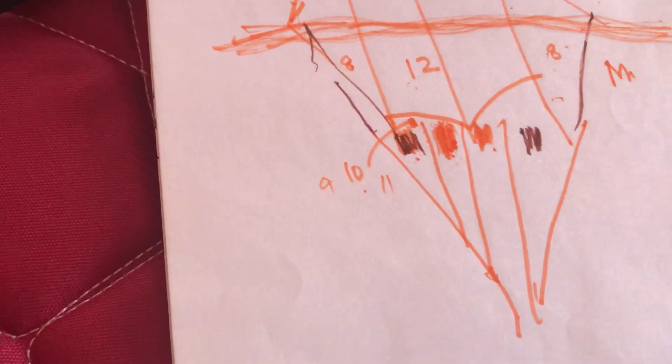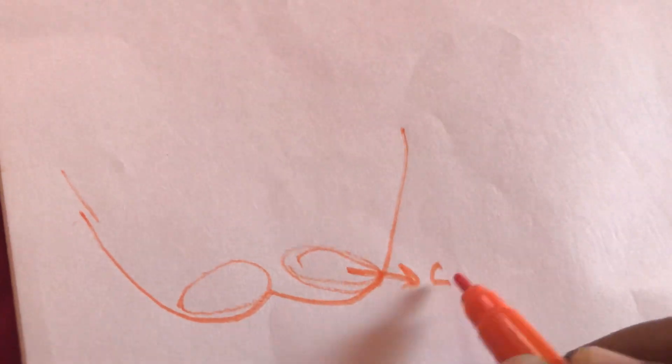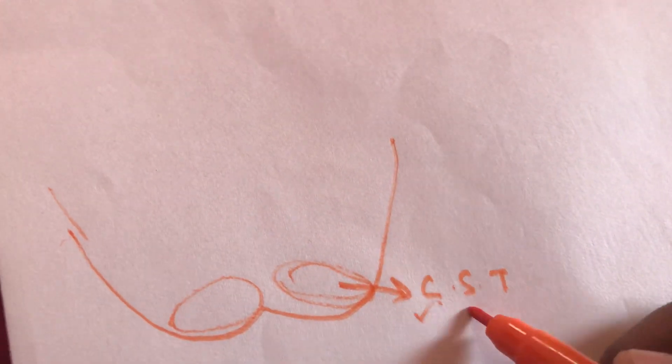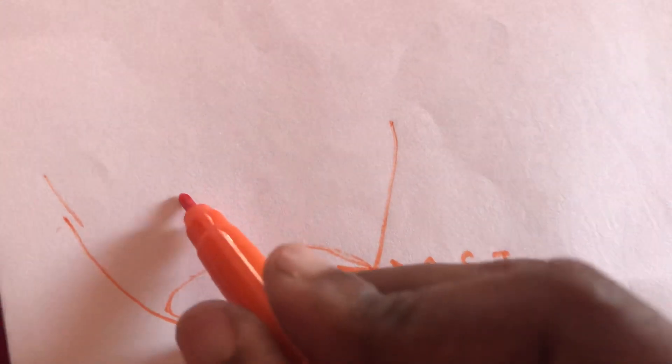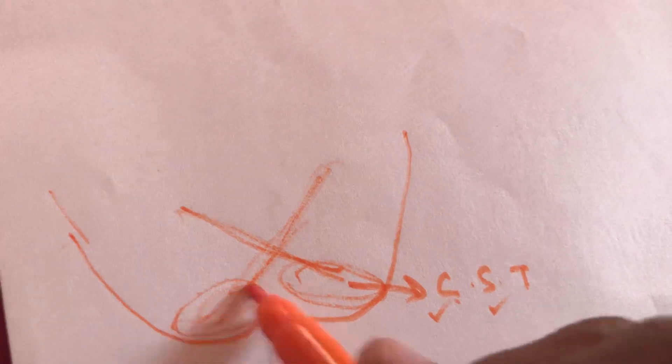Now moving to cut sections. The first cut section is for pyramidal decussation. The corticospinal tract comes from the cerebral cortex to the spinal cord. When it reaches the medulla oblongata, it decussates — decussation means crossing. After crossing, it forms a bulge called the pyramid. This is called pyramidal decussation.